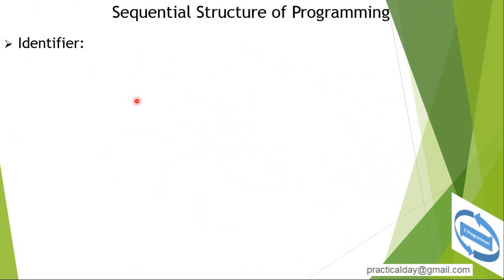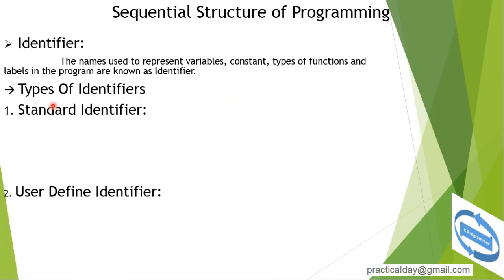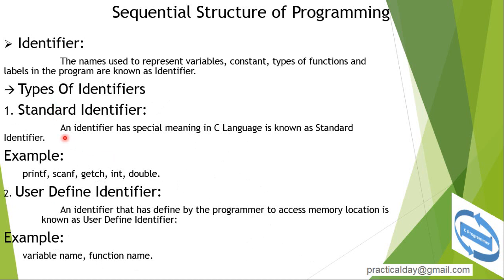In sequential structure of programming, we learn about identifiers. What is an identifier? The names used to represent variables, constants, types of functions, and labels in the program are known as identifiers. There are two types of identifiers: the first is standard identifier, and the second is user-defined identifier.